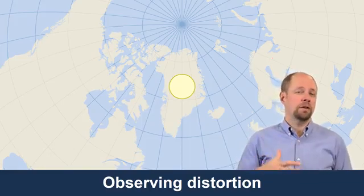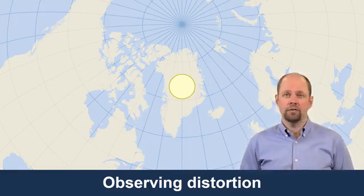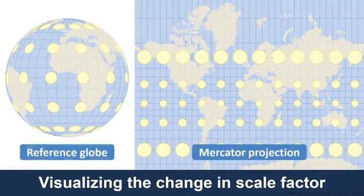We can think of that in terms of scale factor as well. We take circles on our reference globe and transfer those onto our projections. On the reference globe, those circles are all the same size and the same shape. When we transfer them, we see what happens — are they still the same size? Are they still the same shape?